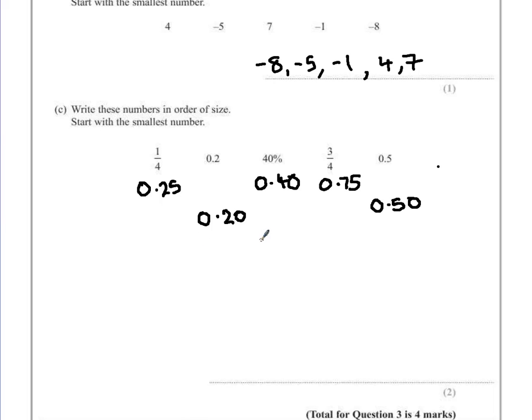The second mark is for putting them into order. So our smallest value here, we just compare them by numbers, is 0.20. So 0.2 was our smallest. After that, we can now see that one quarter is slightly bigger. 0.25. So we have one quarter is the next one.